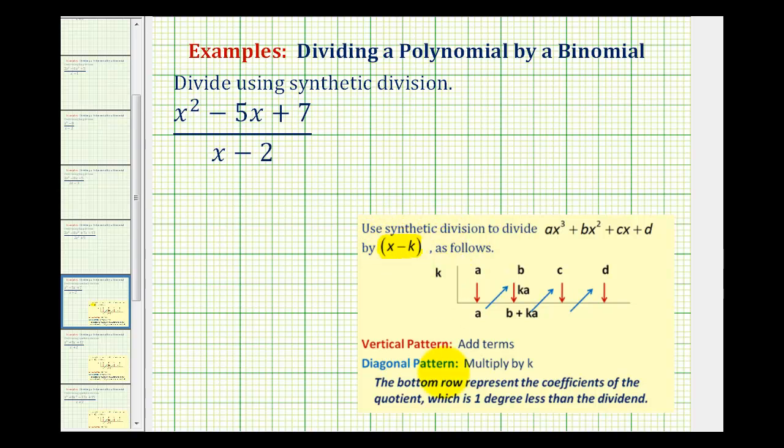Here are some notes on synthetic division. The first step is to list the coefficients of our dividend. Since we have one x squared minus five x plus seven, our coefficients will be one, negative five, and seven.